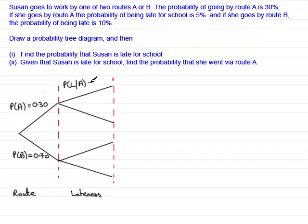That is 5%. That is 0.05 as a decimal. So the probability of not being late, that's L with a little dash, given that she took route A, knowing that this has got to come to one whole one, must be 0.95.